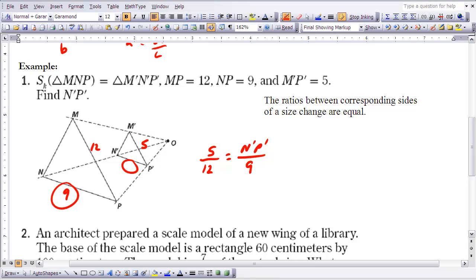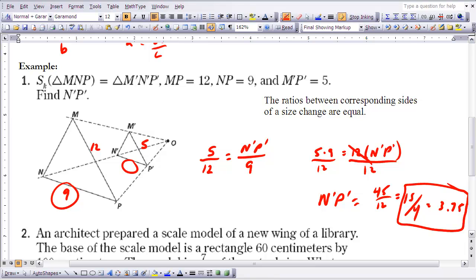So once I have that proportion set up, I can cross multiply and solve. So I can say 5 times 9 is equal to 12 times N'P', and then I can divide both sides by 12. If I do that, I'll have what N'P' is. So you've got 5 times 9 divided by 12, which is 45 over 12, which equals 15 fourths. Or you could also write that if you want to write it as a decimal, that would be 3 and 3 fourths or 3.75. So either one of these answers would work for the length of N'P'.